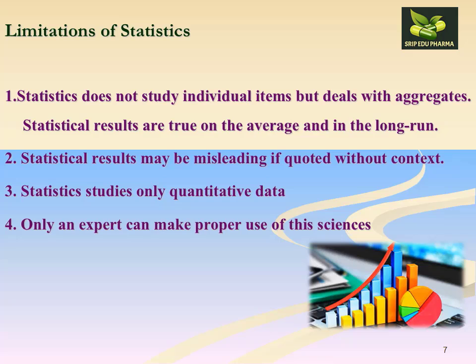Limitations of statistics: statistics does not study individual items but deals with aggregates. Statistical results are true only on average and in the long run. Statistical results may be misleading if distorted with context. Statistics studies only quantitative data, and not everyone can make proper use of this science.